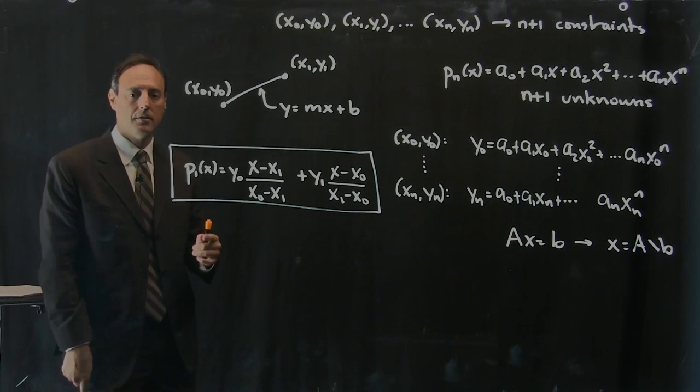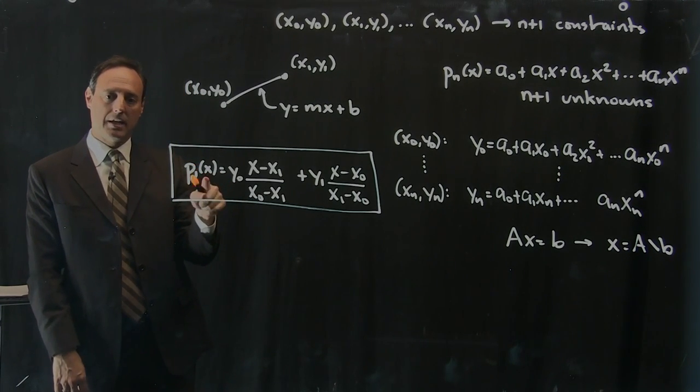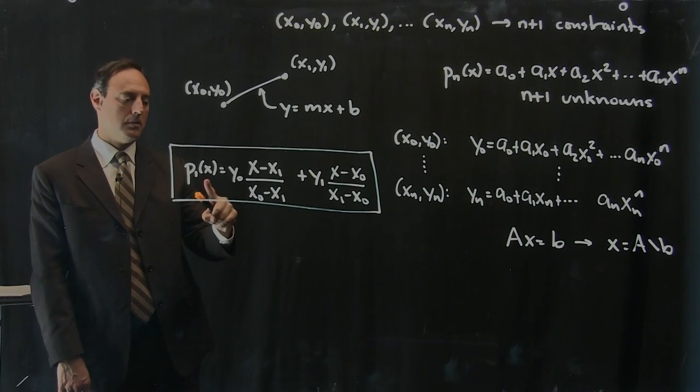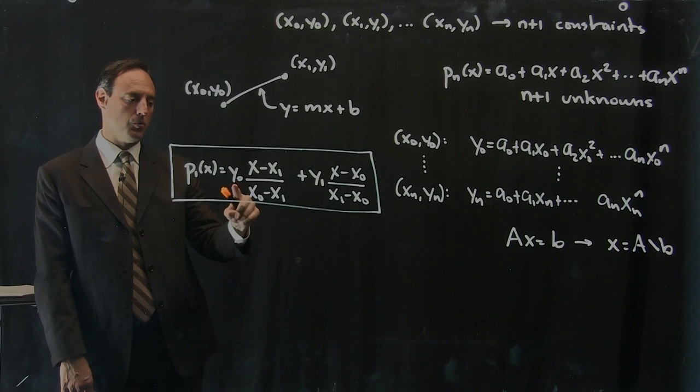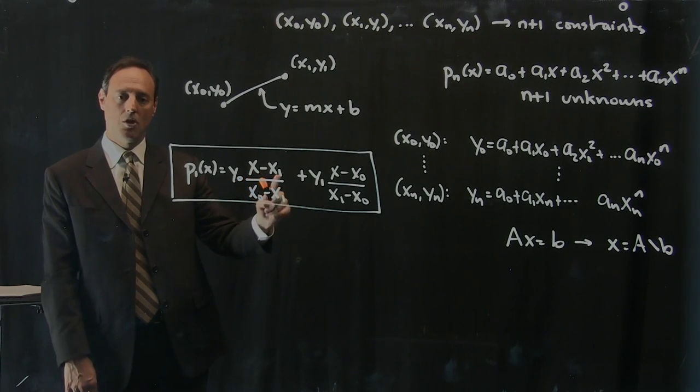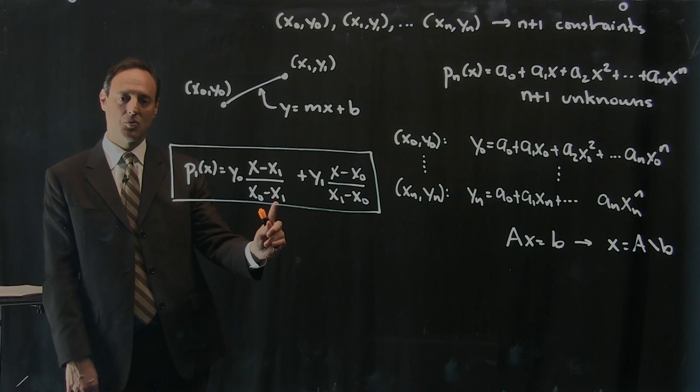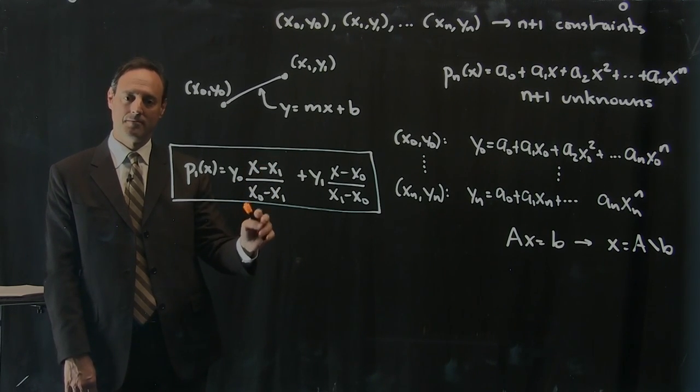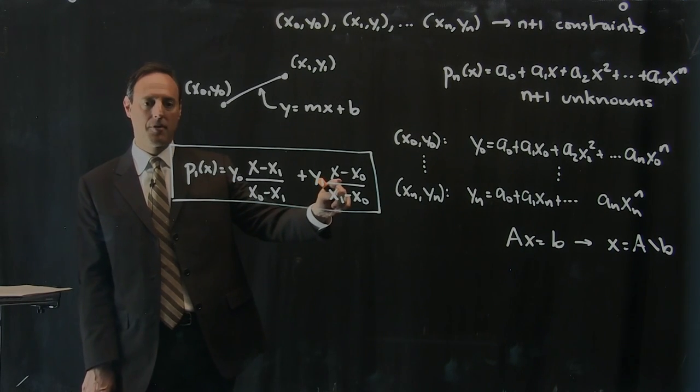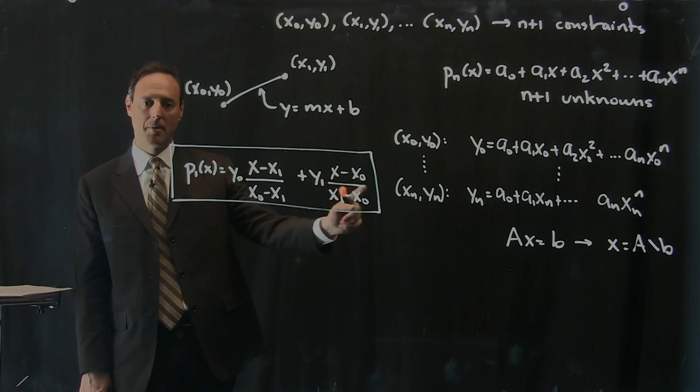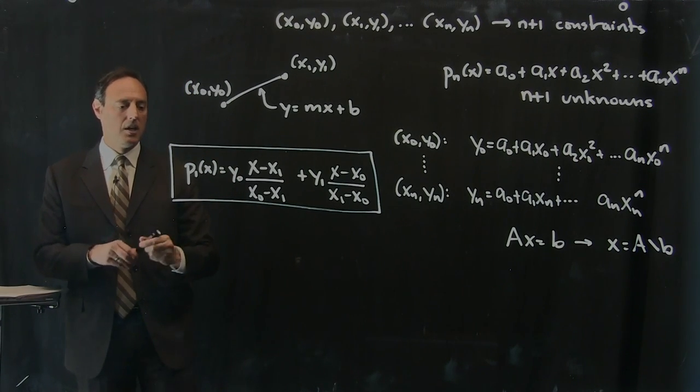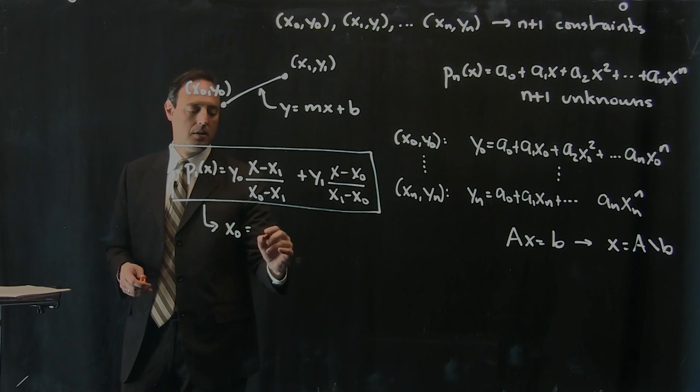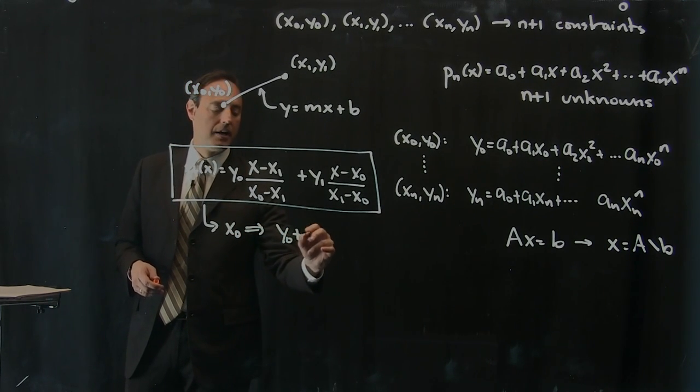So here is the Lagrange polynomial method for something as simple as a line. What does it say? Let's plug in some values. Suppose I put an x0 here. If I put an x0 here, then this becomes y0. y0 equals y0 times x0 minus x1 over x0 minus x1. x0 minus x1 over x0 minus x1, this becomes 1. So I get y0 times 1. And notice what I put in here. If I put an x0 here, I get x0 minus x0, which is 0.